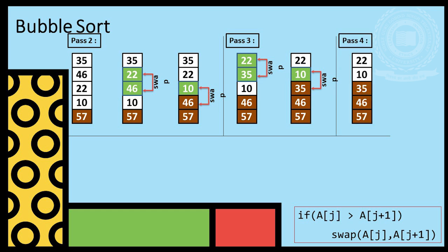Pass 4. We compare 22 and 10 and swap. If n elements, then maximum of n minus 1 passes available.